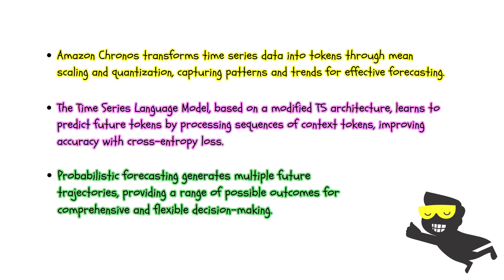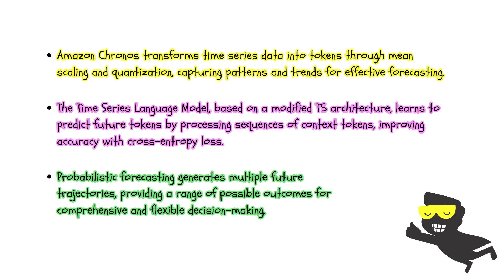Finally, during inference, the model uses the historical context tokens to predict future values. This involves generating new tokens that represent potential future data points, which are then de-quantized and unscaled to their original form. The model doesn't just provide a simple single prediction, but offers multiple future trajectories. And this allows us to understand how the model views the future. Does it converge to a single point? Is it very varied? And this is what makes it robust, and this is the probabilistic part.